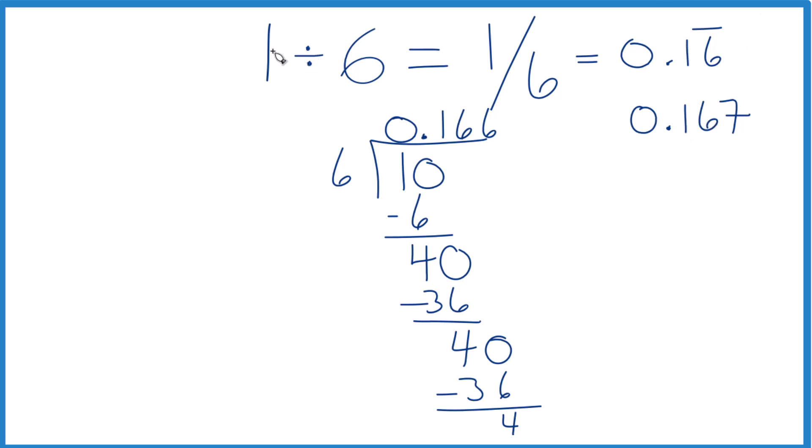Either way, when you divide 1 by 6, you get the fraction 1/6 or the decimal 0.16 with the 6 repeating, which you could round to 0.167.